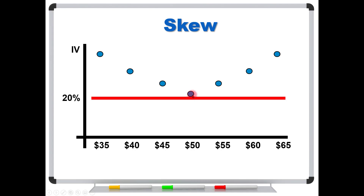Let's say our stock is trading at 50. The at-the-money call is the 50 strike, but you want to buy the 55. If you don't know what you're looking at, you might find that you're actually paying 40% volatility for a stock that's trading at 20%. The option's absolute market price might look cheap, but the relative price is quite expensive — instead of paying at 20%, you're paying up at 40%.